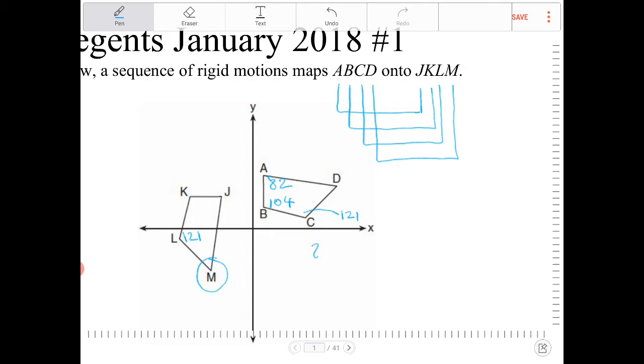So if I take 82, add it with 104, add it with 121, plus angle D, this must equal 360.